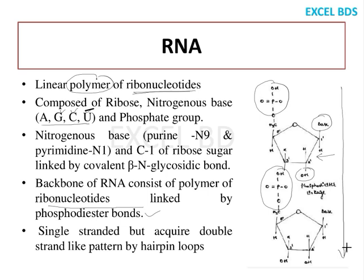RNA is single-stranded, but sometimes it can acquire a double-stranded form. For example, if the linear strand takes a turn, it may form bonding within the structure — that is called a hairpin loop. Like a hairpin, it forms a loop, and in such cases it can appear double-stranded, but RNA is actually a single-stranded structure.